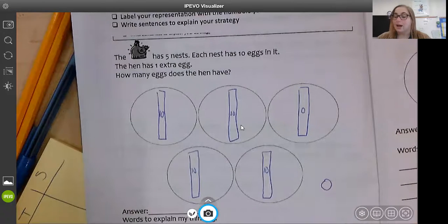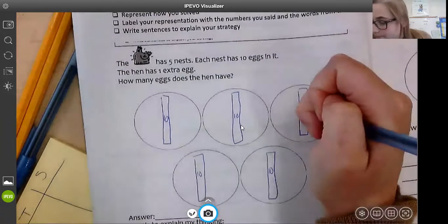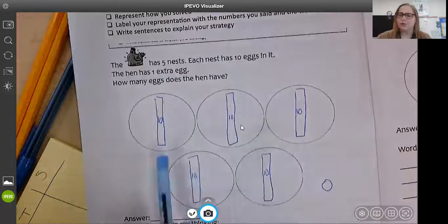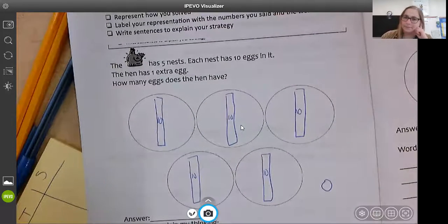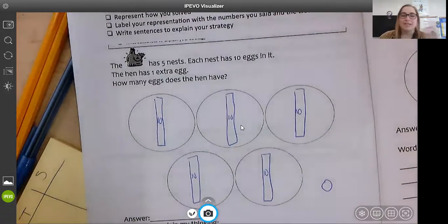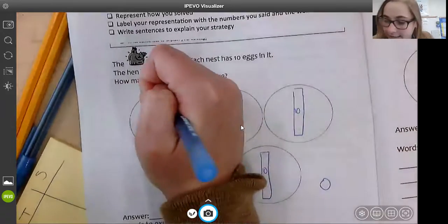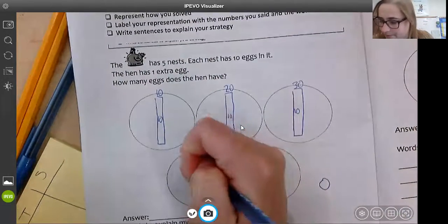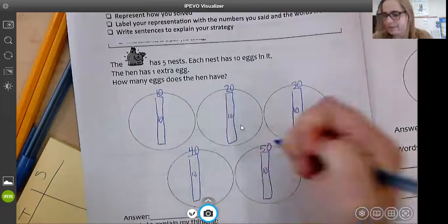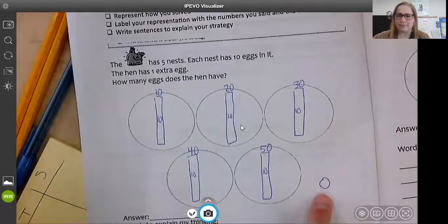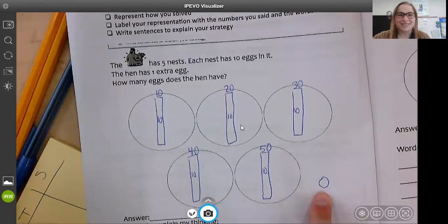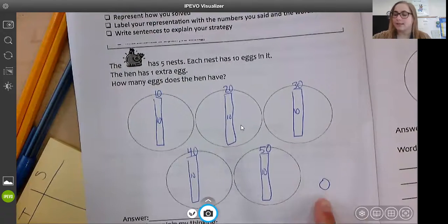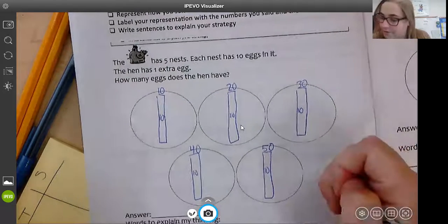Now I want to know how many eggs does the hen have all together? If I see a group of 10, what can I count it by? Yes, I can count it by 10s to go faster. 10, 20, 30, 40, 50. Look at this. Can I count that by 10s? No, that's not a 10. That's a one. So I need to count on by ones. 50, 51.